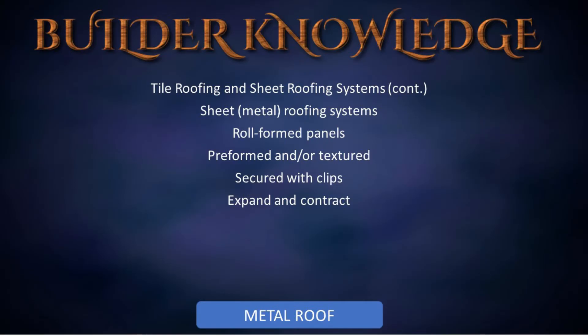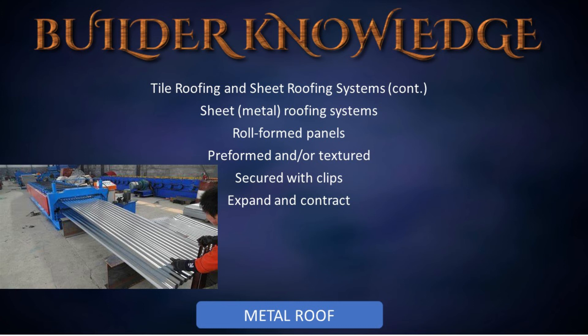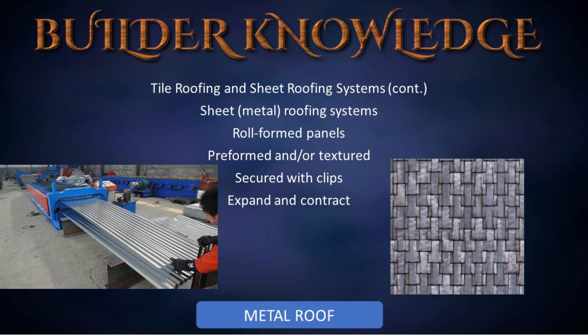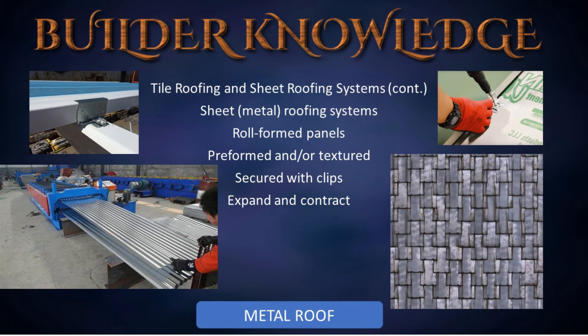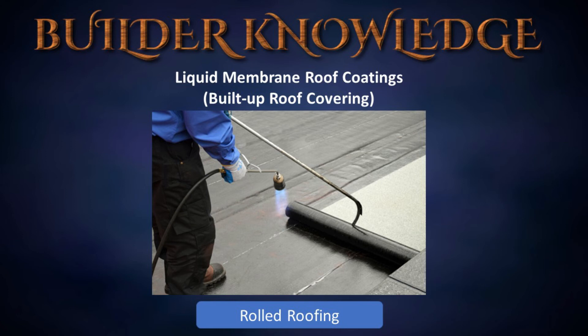Moving on to sheet metal roofing systems: these use roll-formed panels manufactured from aluminum, copper, zinc, and galvanized steel. They can be preformed or textured to provide the appearance of shingles or tiles. They are secured in place using clips concealed inside the seams, attached to the roof sheathing using lag bolts. The clips also allow the panels to expand and contract with temperature changes, reducing the chance of roof leakage.